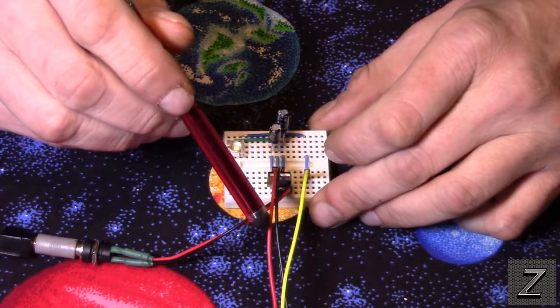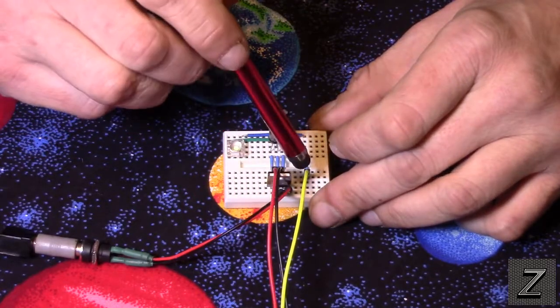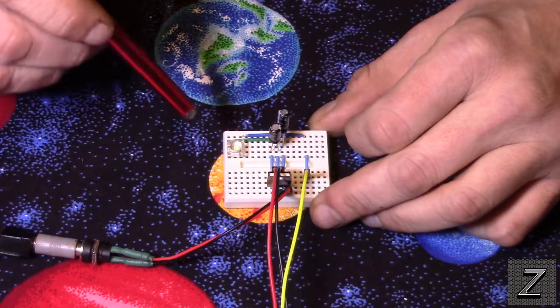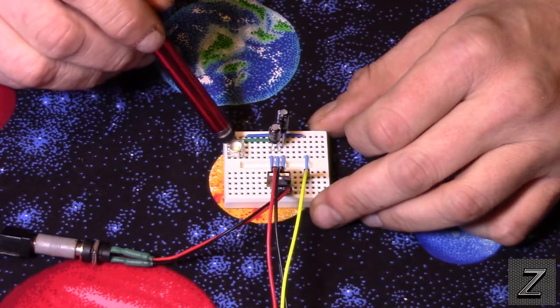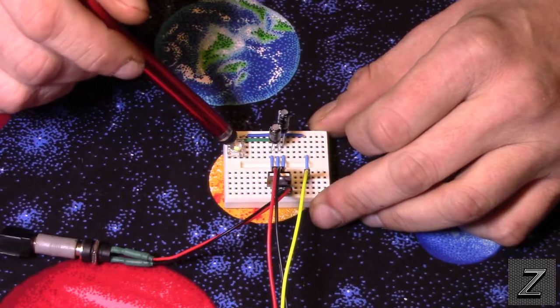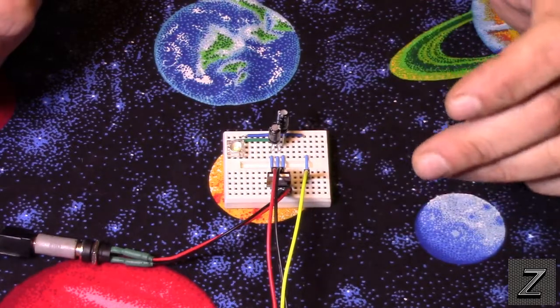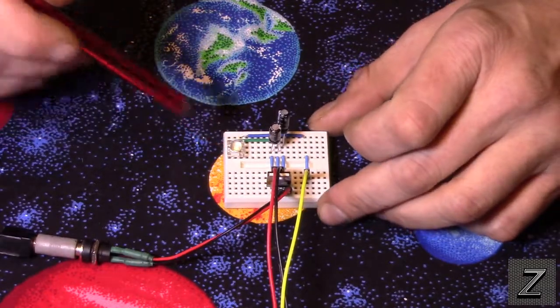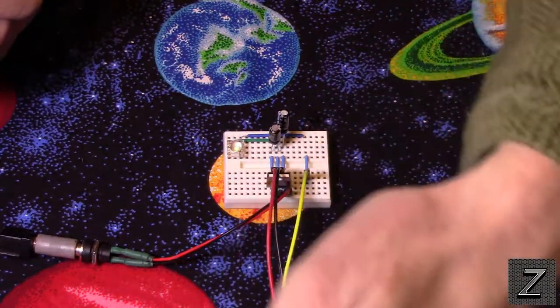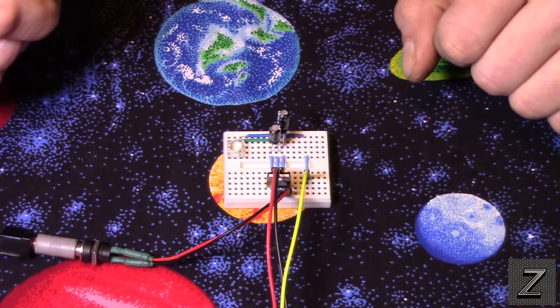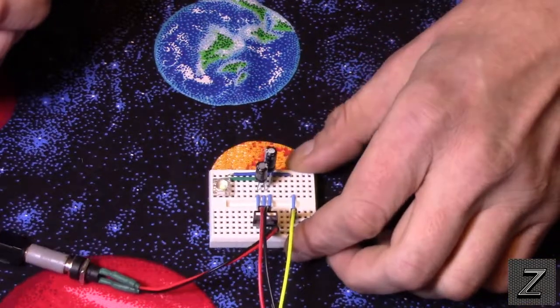And then I'm just directly using the output of the PIR module. Now the PIR module is powered by 5 volts, but its output is 3.3 logic. And that worked out where I did not have to use any resistors or anything with this little Piranha LED. You can see I put my hand in front of it, it triggers it.